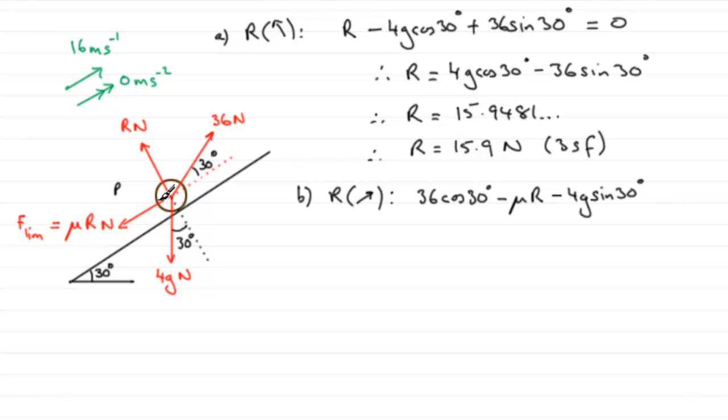Because there's no acceleration, it's moving at a constant speed. Normally we'd have force equals mass times acceleration, but the acceleration is zero, so mass times zero is just zero. The overall resultant force acting on the particle is zero.